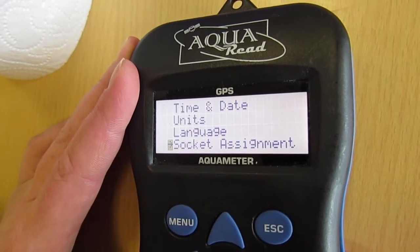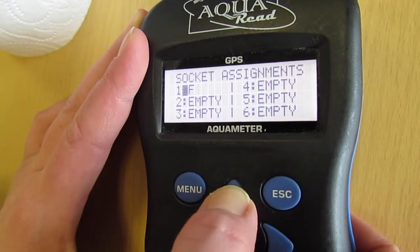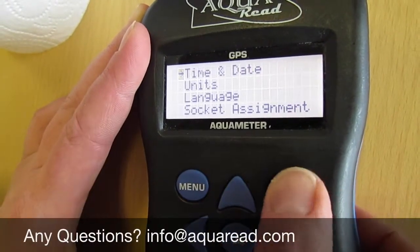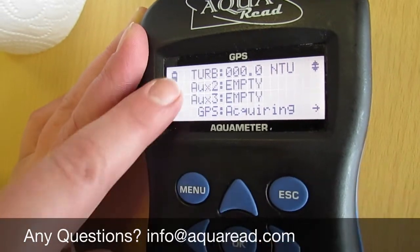Go to socket assignment. As we put it in AUX1, scroll through to TURB and press OK. Now TURB has been installed into AUX1.